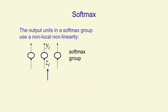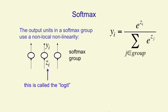It's a kind of soft continuous version of the maximum function. The units in a softmax group each receive some total input accumulated from the layer below — that's zi for the ith unit, and that's called the logit. Then they give an output yi that doesn't just depend on their own zi; it depends on the z's accumulated by their rivals as well. So the output of the ith neuron is e to the zi divided by the sum of that same quantity for all the different neurons in the softmax group.